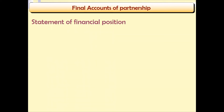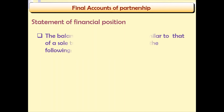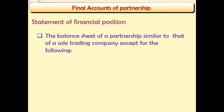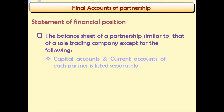Following is the Statement of Financial Position. The Statement of Financial Position of a partnership business is similar to that of a sole proprietorship, except it has a few differences: capital accounts and current accounts of each partner are listed separately in the statement of financial position.